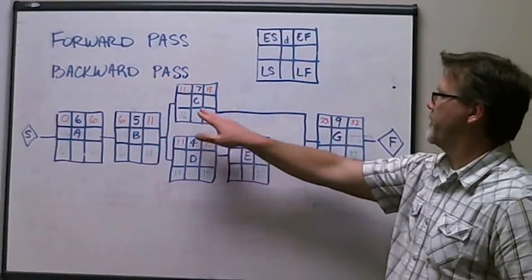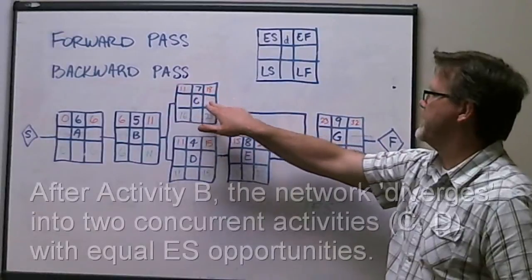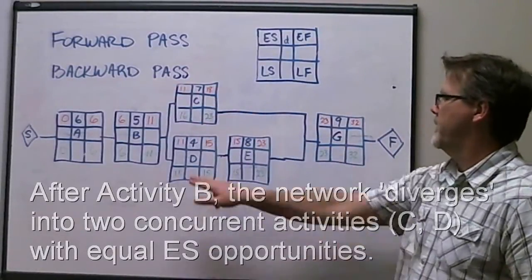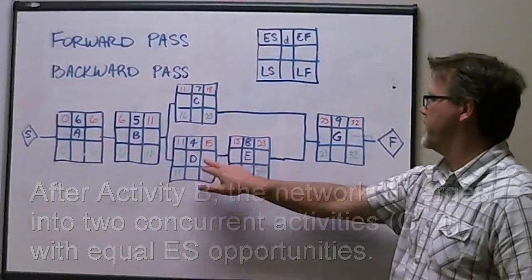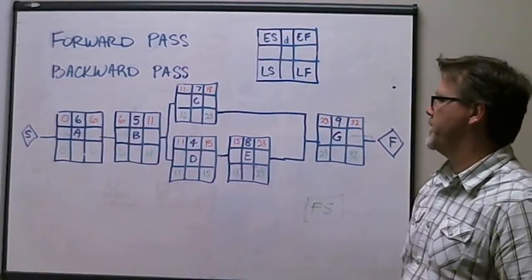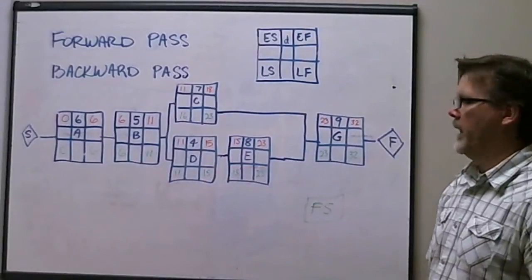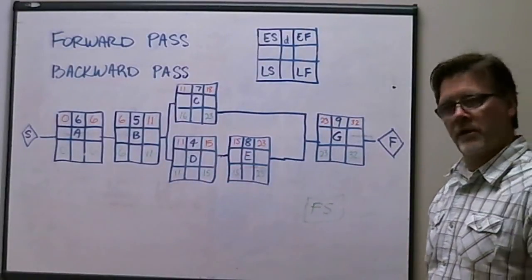Do the math, 11 plus seven days is 18, so the early finish for activity C is day 18. 11 plus four is 15, so the early finish day for activity D is 15. And continue with that logic, if you will.